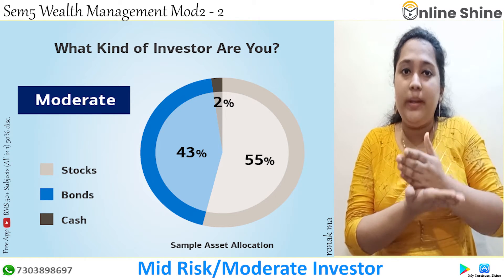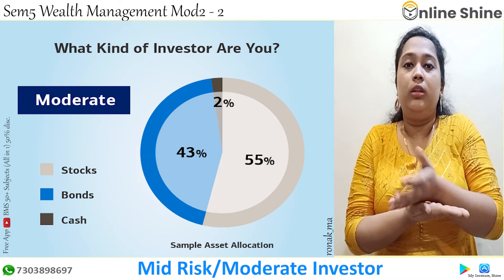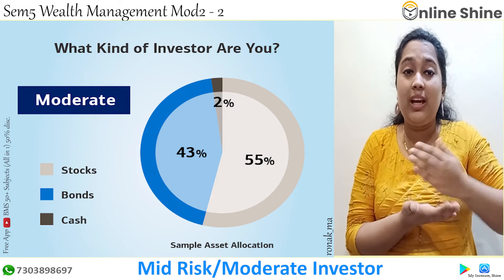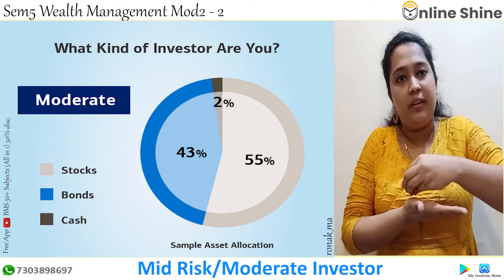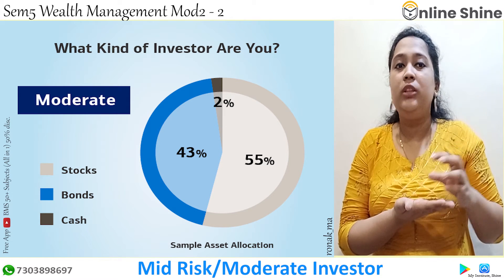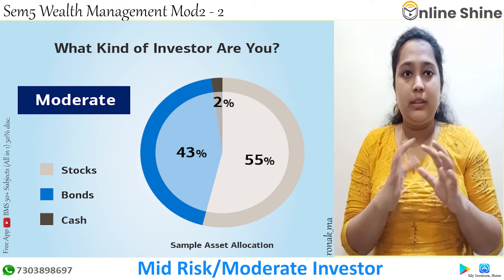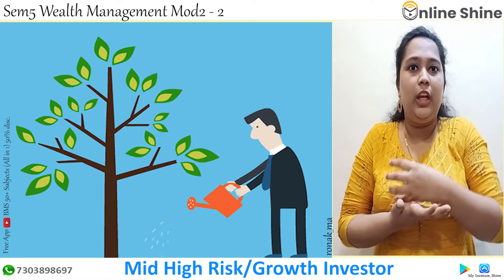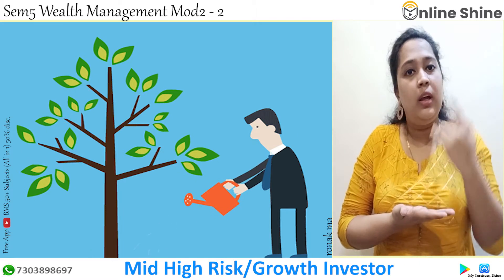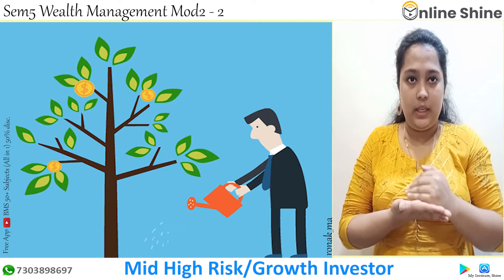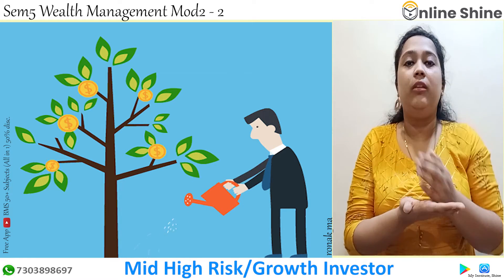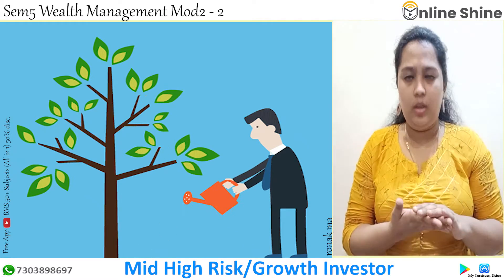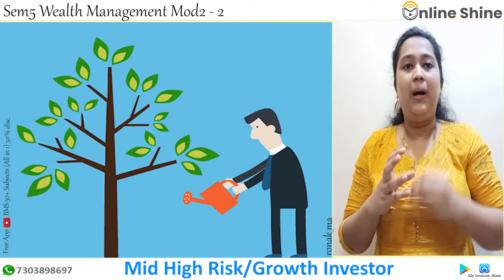Moderate investors are the ones who invest in a mix of equity, bonds, and cash. For example, they invest 30% in equity, 35% in bonds, and 25% in cash. They are the ones who split their investments — for example 50% in equity, 30% in bonds, and 20% in cash or commodity. They take more risk than defensive investors but also invest in other asset classes.